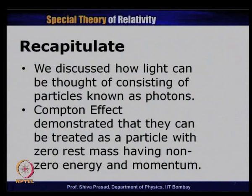We have a condition that if a particle has zero rest mass, it must travel with the speed of light, and we know that light travels with the speed of light. So this is consistent in saying that light consists of particles called photons. We discussed how light can be thought of as consisting of particles known as photons.